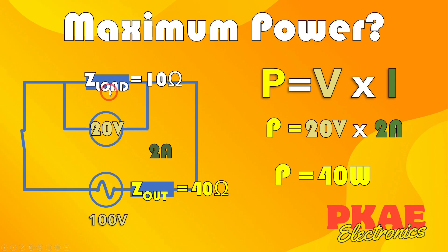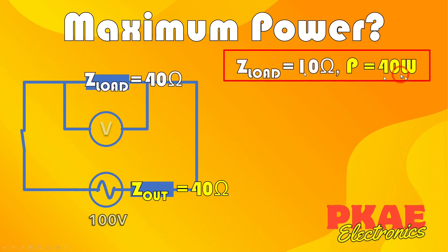There are 40 watts being transferred from this supply to this load. So let's keep a note of that — when we had 10 ohms, we had 40 watts of power.